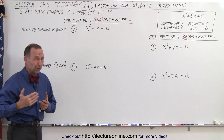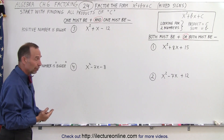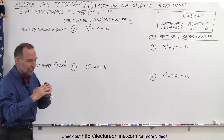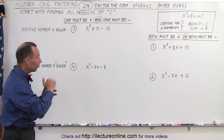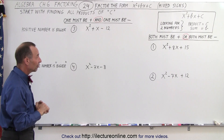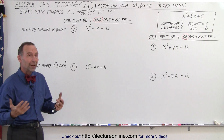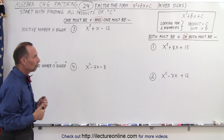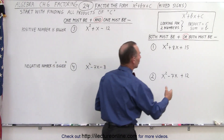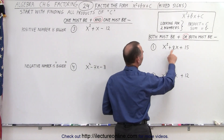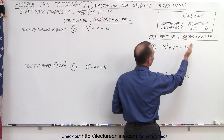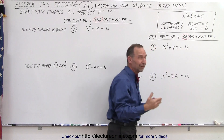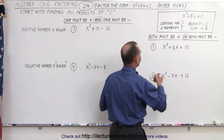If the middle term is negative, then the negative number is the bigger of the two. Of course, a negative number is never bigger than a positive number, but you understand what I'm saying — you get a bigger quantity there, except with a negative sign in front of it. Now let's apply what we've just learned. In the first case, we realize that both must be positive or both must be negative, but since the middle term is positive, they're both positive.